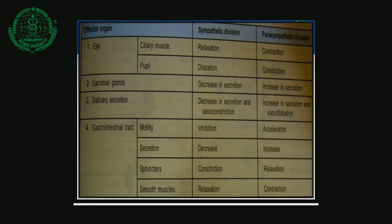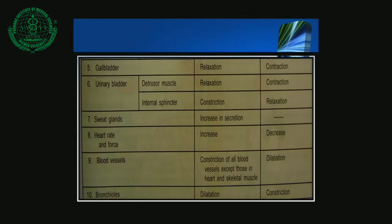Comparing sympathetic and parasympathetic effects: Ciliary muscles — relaxation by sympathetic, contraction by parasympathetic. Pupil — dilation by sympathetic, constriction by parasympathetic. Lacrimal glands — decreased secretion by sympathetic, increased by parasympathetic. Salivary secretion decreases with sympathetic. Gastrointestinal motility — inhibited by sympathetic, accelerated by parasympathetic. Secretion decreases by sympathetic, increases by parasympathetic. Sphincters — constriction by sympathetic, relaxation by parasympathetic. Urinary bladder detrusor muscle — relaxation by sympathetic, contraction by parasympathetic. Heart rate and force increase by sympathetic.